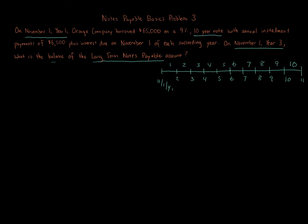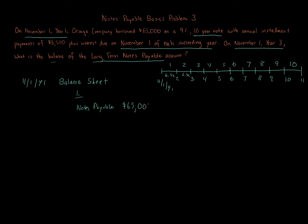The annual installments are due on November 1st of each succeeding year, so each period has a $6,500 payment. On November 1st, Year 1, the balance sheet shows notes payable at the full $65,000. As of that date, the current portion is just the next $6,500 due, and the long-term portion is $65,000 minus $6,500, which equals $58,500.